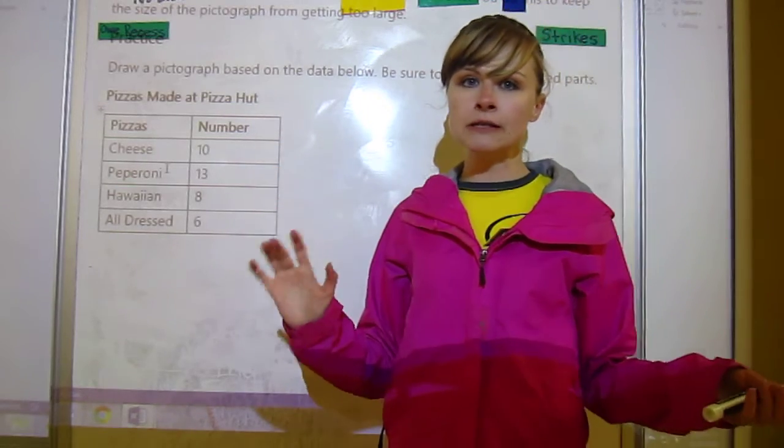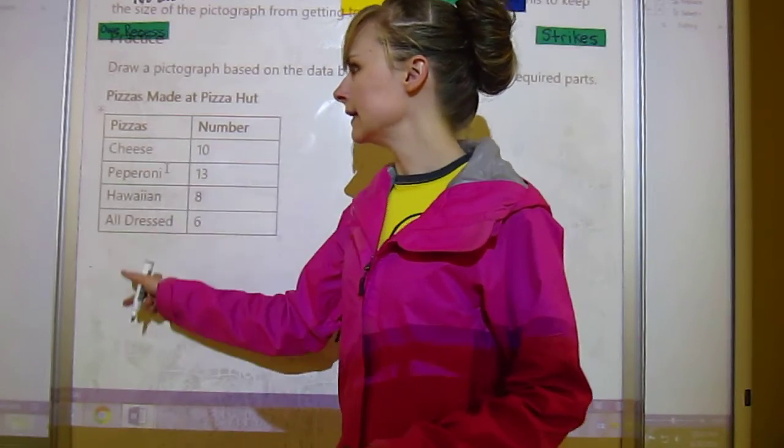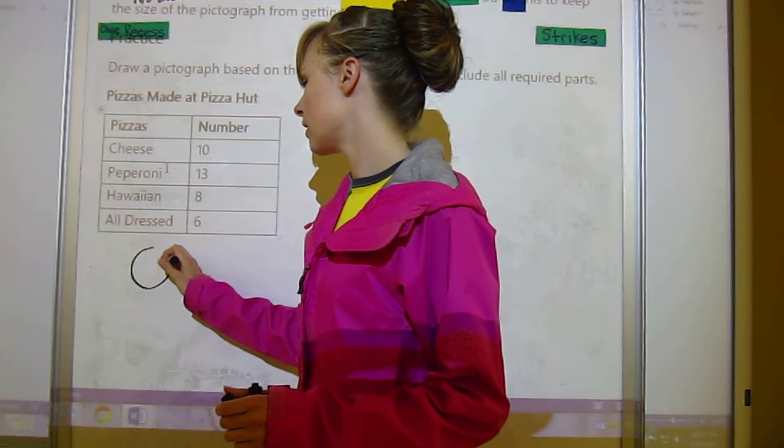The first thing that we do is we decide on the picture that we'd like to draw. Usually we make it related to whatever it is, so usually you do like a pizza or something. I will draw a pizza.